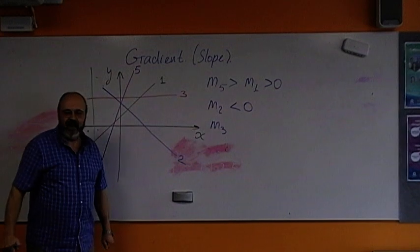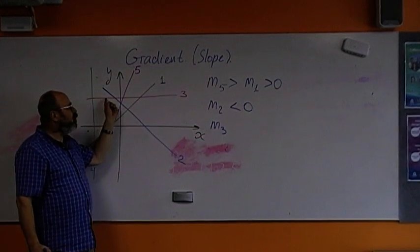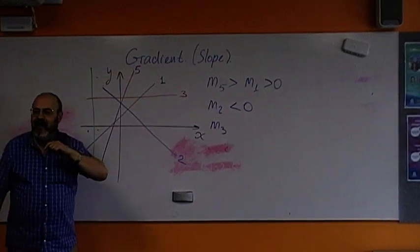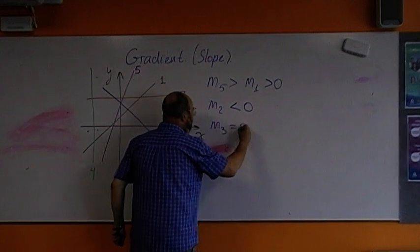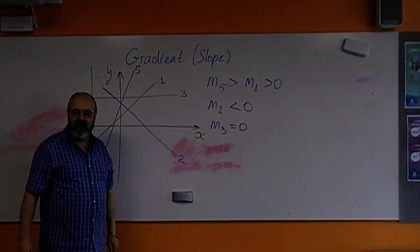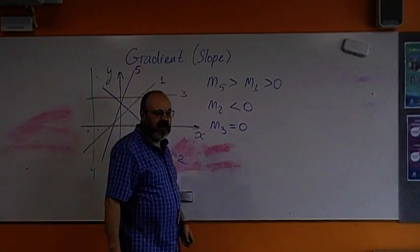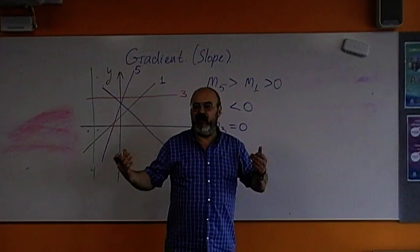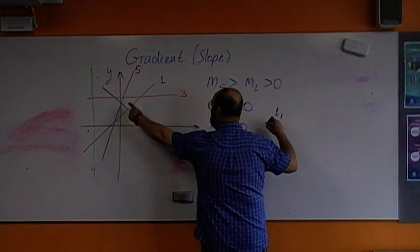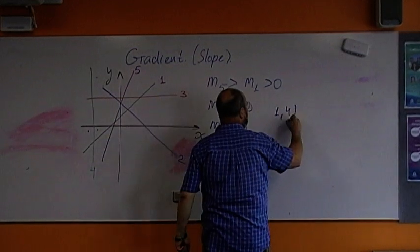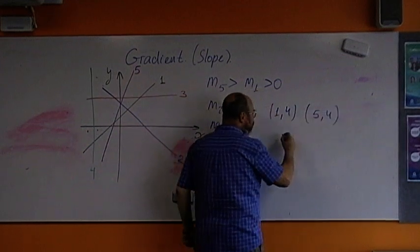What about gradient M3? It's horizontal. When it's horizontal, does y coordinate change? Gradient of line M3 is zero. Example, to better understand. So, as it's horizontal, we take any two points and they will have same y coordinate. Let's say we take one, four. And another point is five, four. Let's find the gradient.